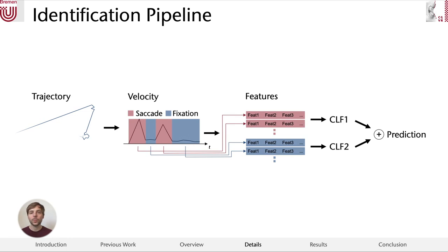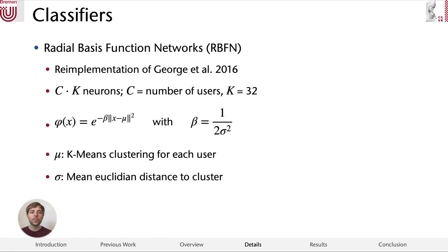In this work, we use two different classifiers. First, we re-implement the radial basis function networks by George et al. Here, in the hidden layer, we have C · K neurons, where C is the number of users and K is an arbitrary constant. In our work, we found 32 to be a good default.